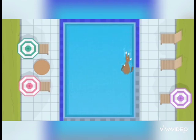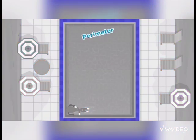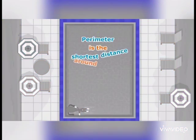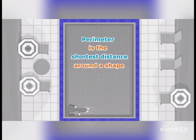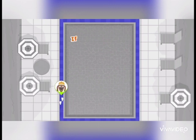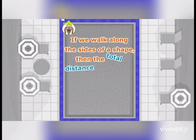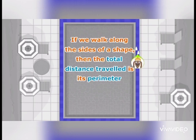Let us assume a swimming pool of rectangular shape and you have to swim along its sides to find its perimeter. Perimeter is the shortest distance around a shape. Or, if we walk along the sides of a shape, then the total distance travelled is its perimeter.